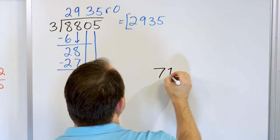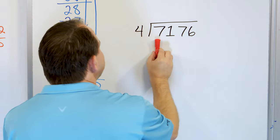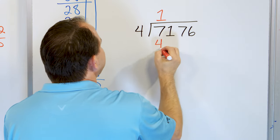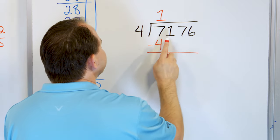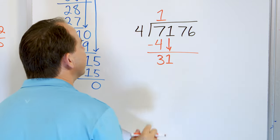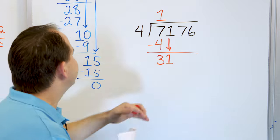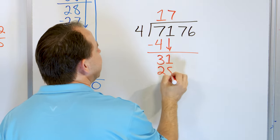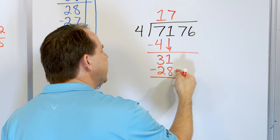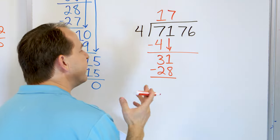Problem number 4: 7,176 divided by 4. First digit — 4 times 1 is 4, 4 times 2 is 8, that's too big. So we go back to 4 times 1, multiply and get a 4. 7 minus 4 is 3. After we subtract, grab the next digit, now you have a 31. 4 times 7 is 28, 4 times 8 is 32 — too big. So 4 times 7 is 28. Start at 28 and count up to 31: 29, 30, 31 — the difference is 3.